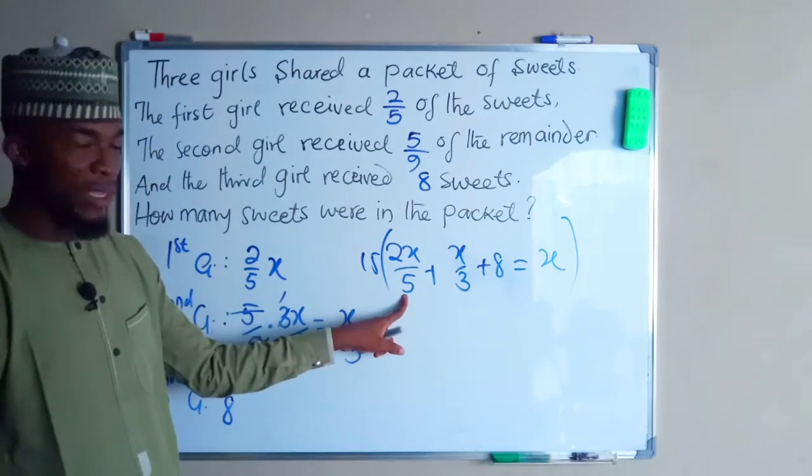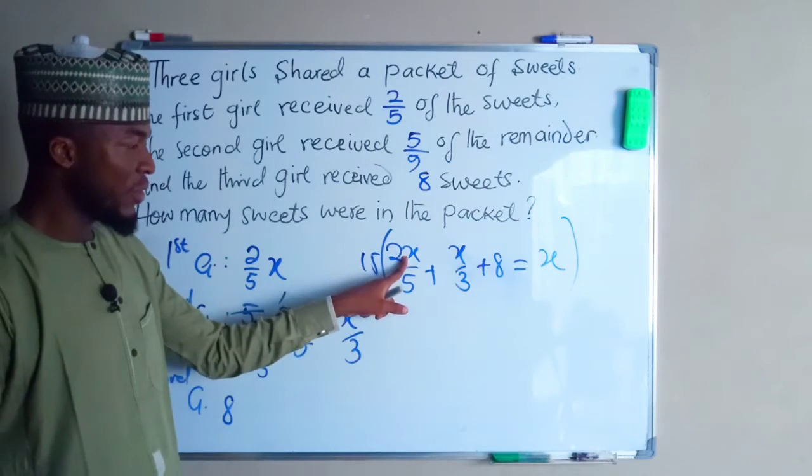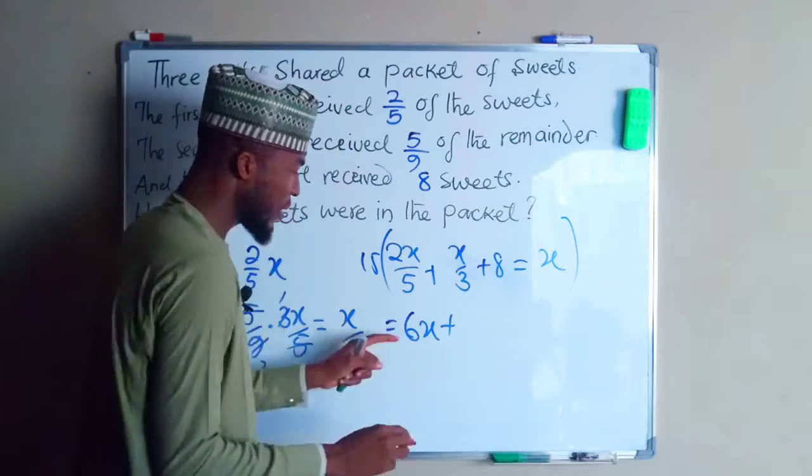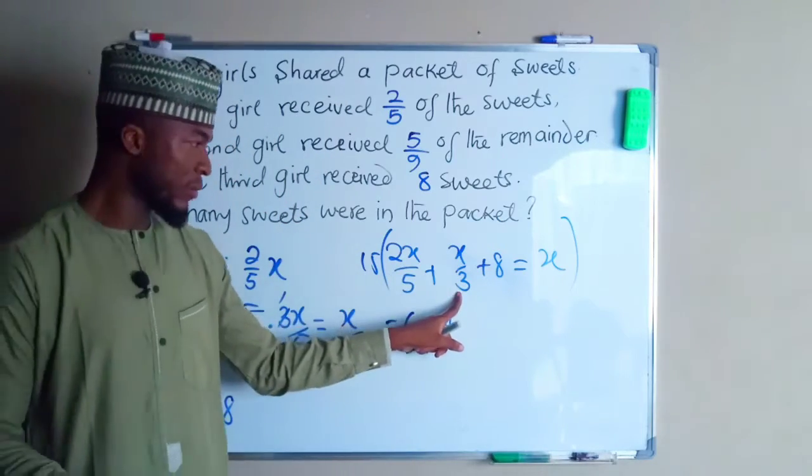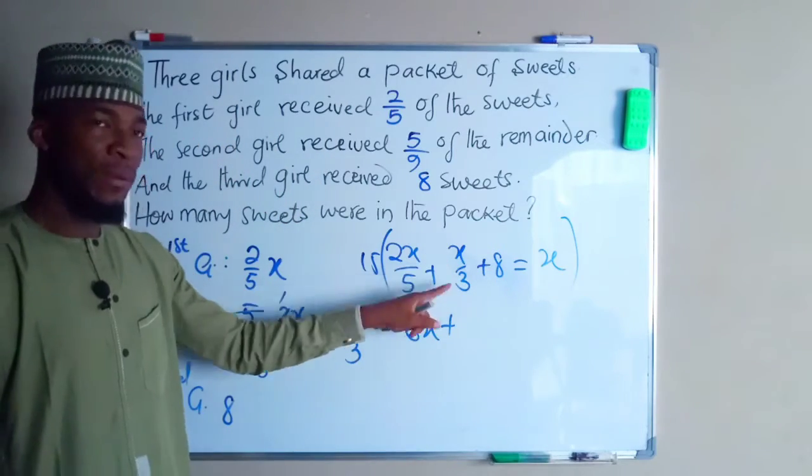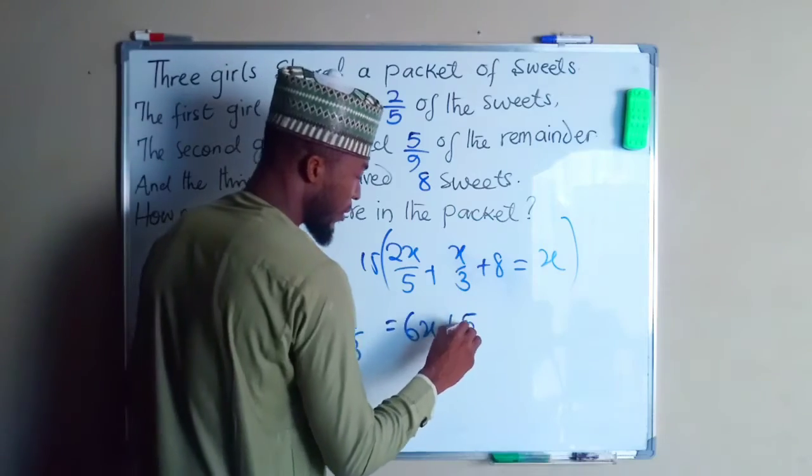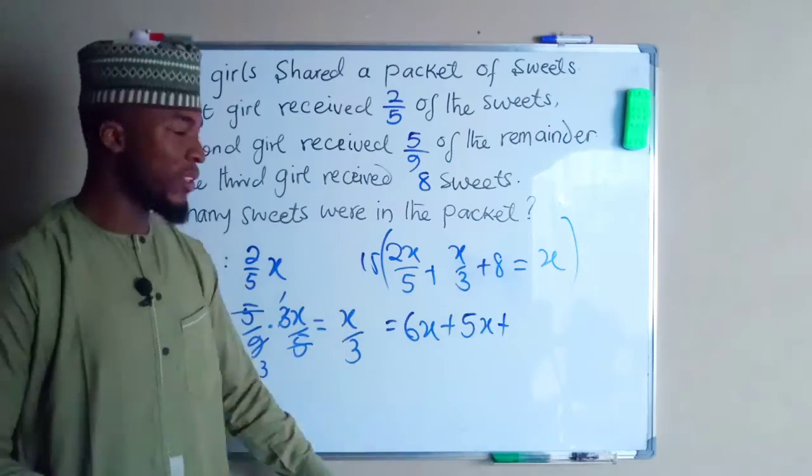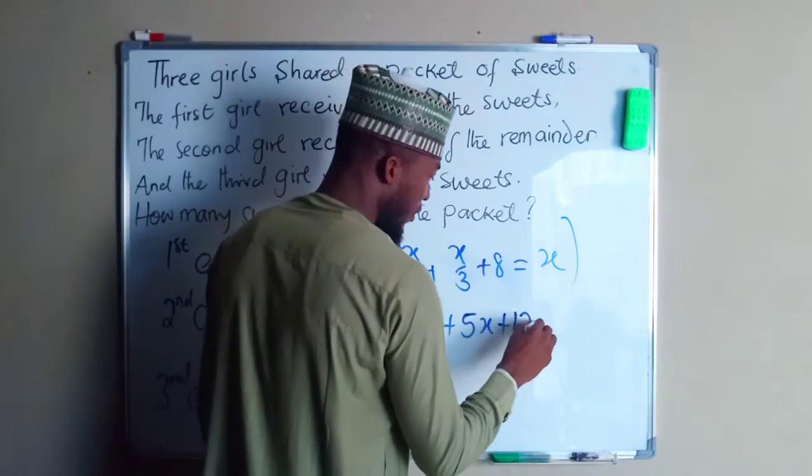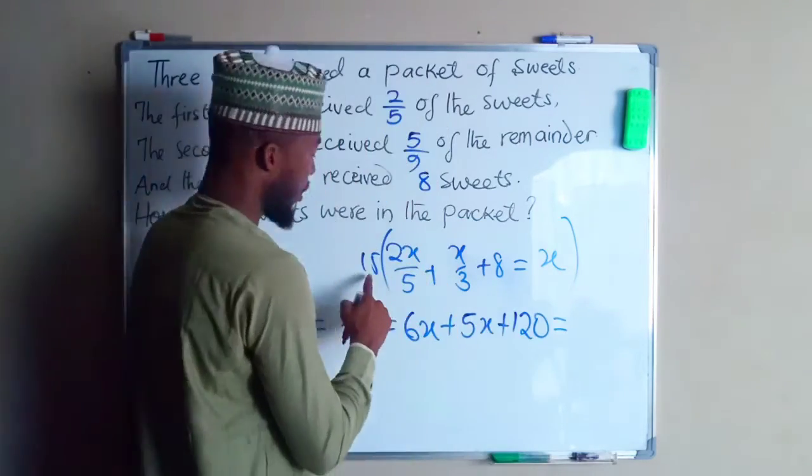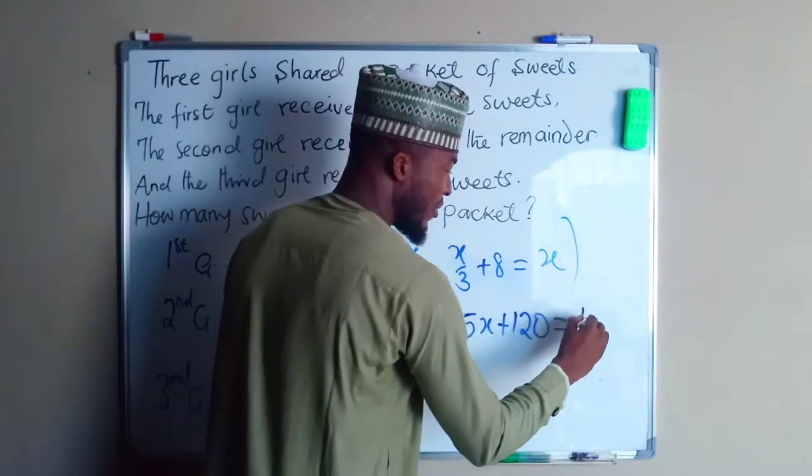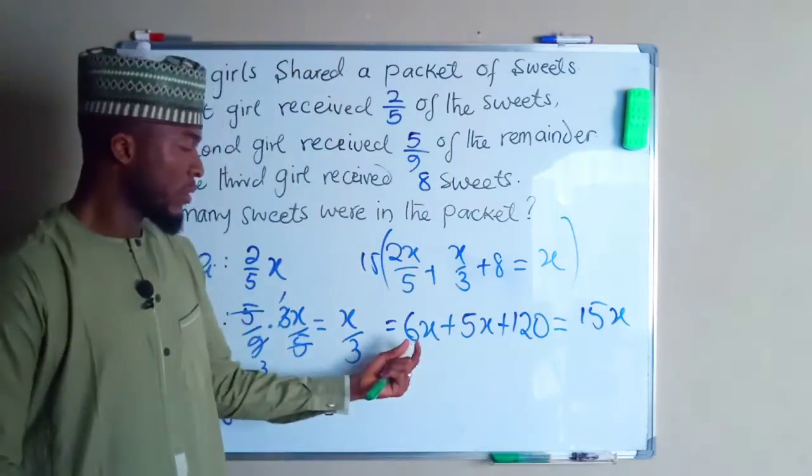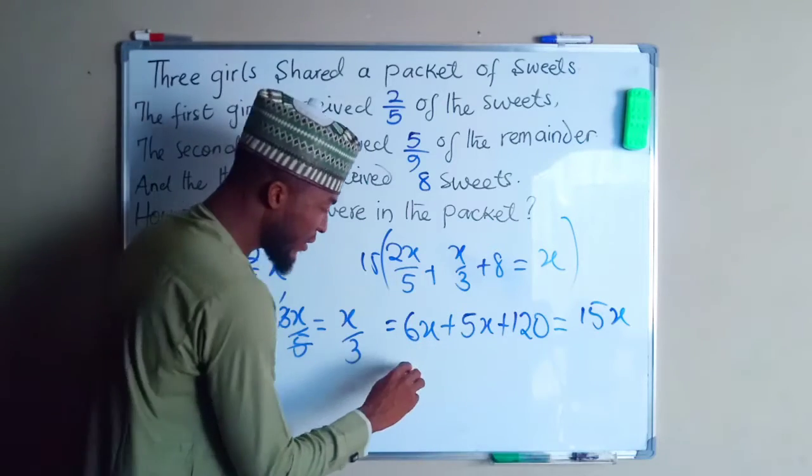15 divided by 5 is 3, times 2X we have 6X. Plus 15 divided by 3 is 5, 5 times X is 5X. Plus 15 times 8 is 120, and 15 times X is 15X. This plus this is 11X. So we have 11X plus 120, and this is equal to 15X.